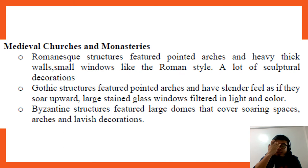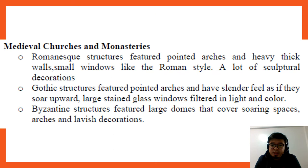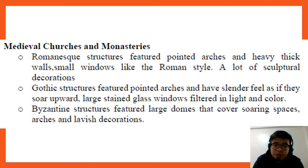Some medieval churches and monasteries: Romanesque architecture featured pointed arches, heavily thick walls, small windows like the Roman style, and a lot of sculptural decoration. Gothic structures featured pointed arches and have a slender feel as if they soar upward, with large stained glass windows filtering in light and color. Byzantine structures featured large domes covering soaring spaces, arches, and lavish decorations.